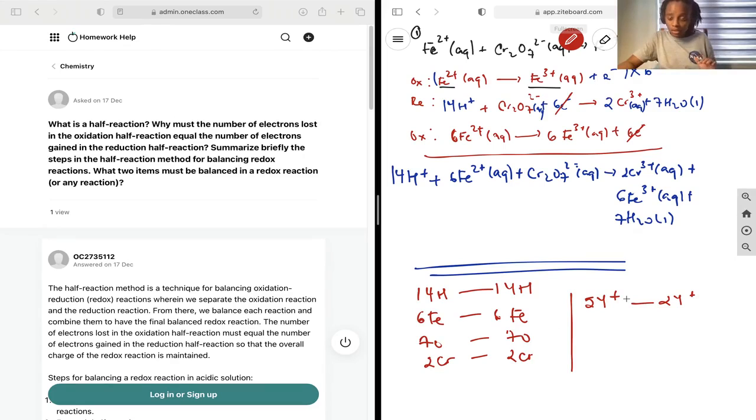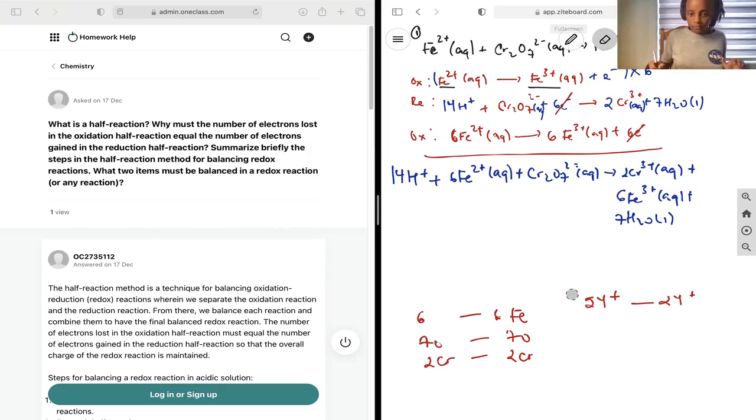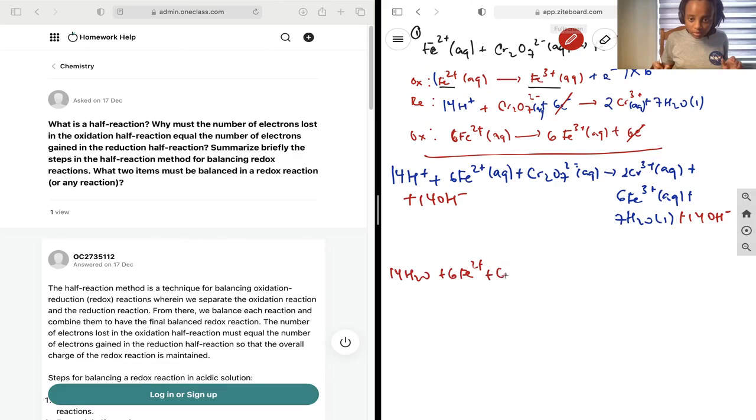If you want to continue and it's a basic solution instead of an acidic solution, which they will tell you in the question, let's run through that quickly. You add 14 OH minus here, similarly here 14 OH minus. This becomes 14H2O plus 6Fe2+ plus Cr2O7^2- to 2Cr3+ plus 6Fe3+ plus 7H2O plus 14OH-.